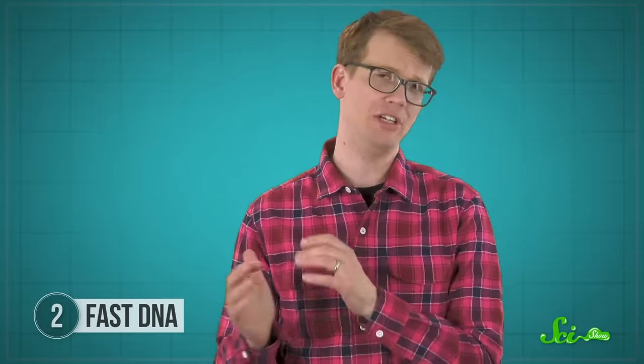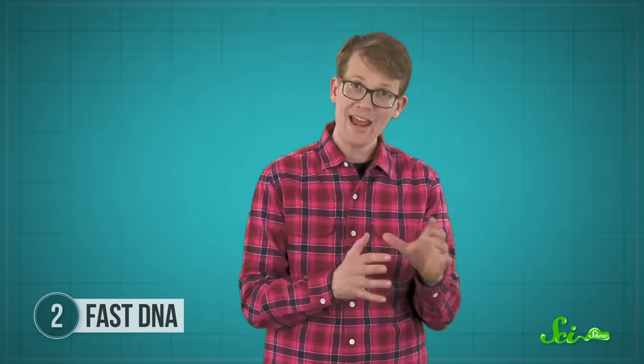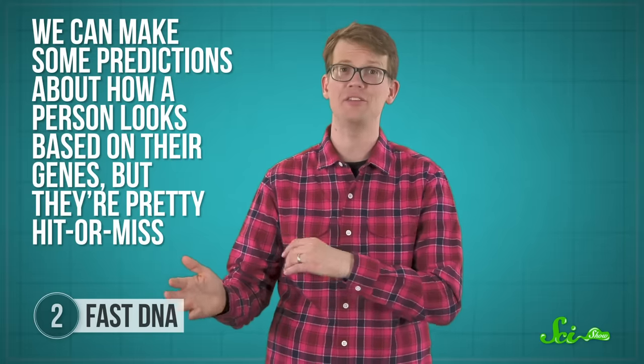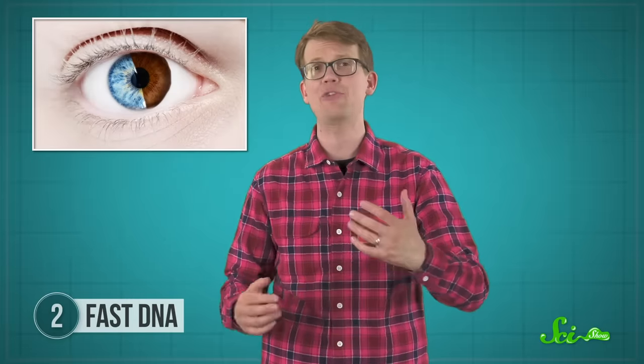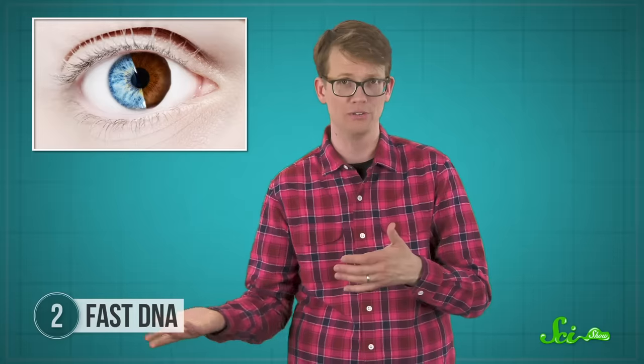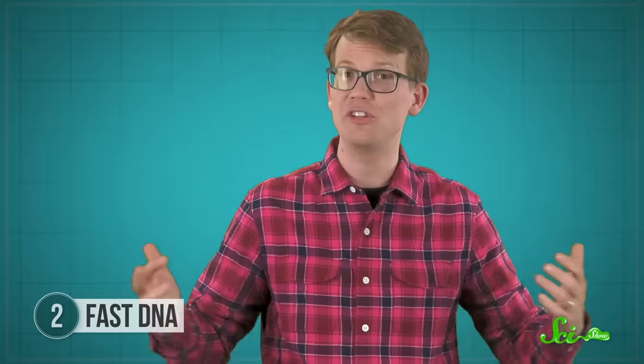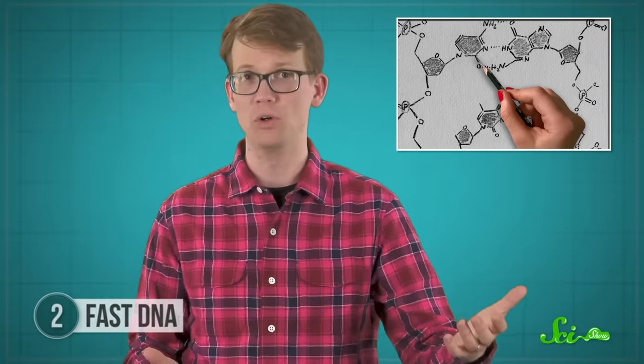What might help forensics more, though, is not just faster DNA processing, but a better understanding of our genes. Right now, we can make some predictions about how a person looks based on their genes, but they're pretty hit or miss. We can't even reliably predict whether a person naturally has blue eyes or brown ones. But if we understood our genomes better, some researchers think DNA testing could essentially be used like a police sketch artist to help narrow down the suspect pool. And better tools could also help us use degraded samples or untangled samples that are a mix of multiple people.